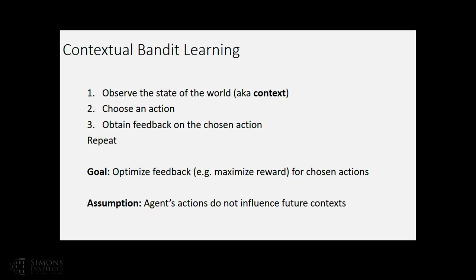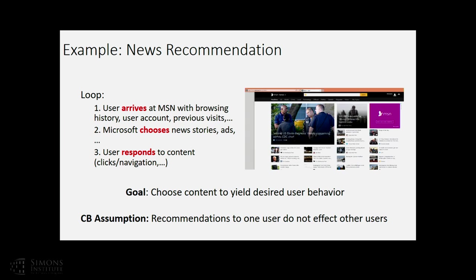In particular, we are trying to learn policies - decision rules that pick actions given a context such that those policies result in high expected reward or high cumulative reward. This is an actual example where the system is currently being used. If you go to msn.com, this is roughly close to the current layout - it keeps changing, but all these different parts of the page decide which news stories to put there.